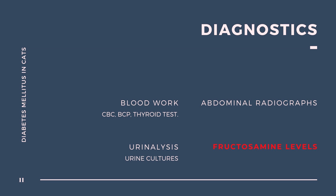Additional tests are often indicated to look for other diseases such as urinary tract infection or fatty infiltration of the liver that may accompany diabetes mellitus. Such tests include a complete blood count, biochemical profile, urinalysis, urine culture, and abdominal radiographs. Because older cats are also prone to hyperthyroidism, a thyroid test may also be submitted.